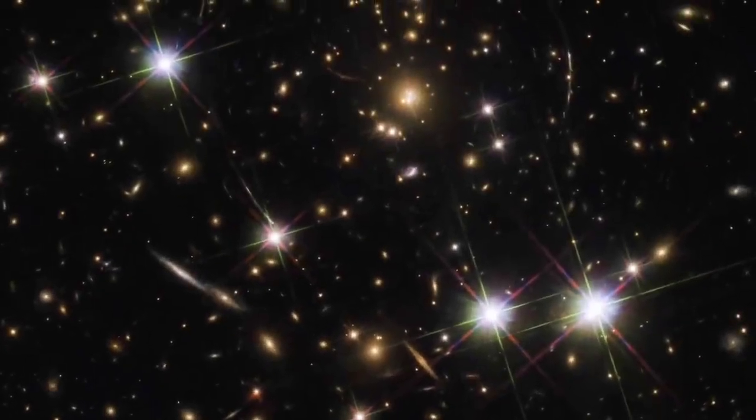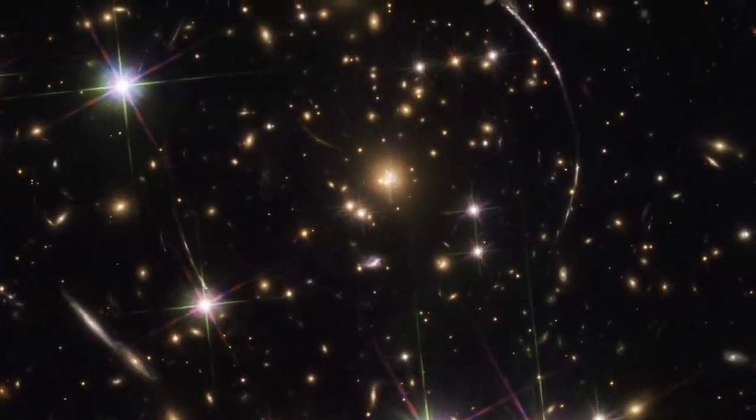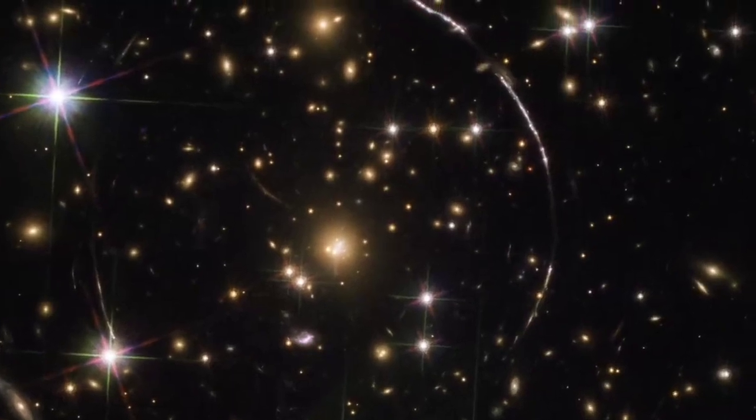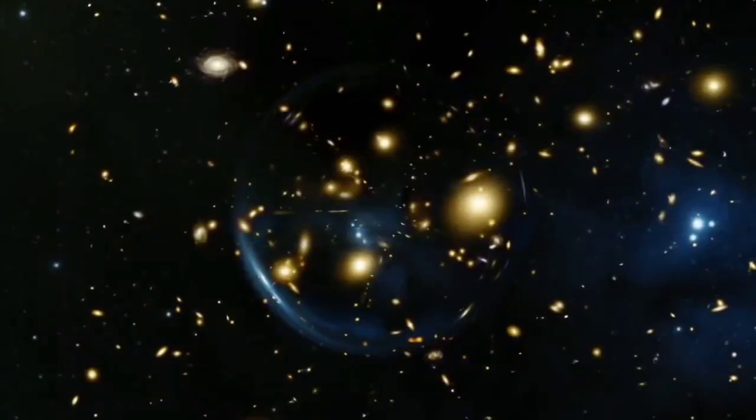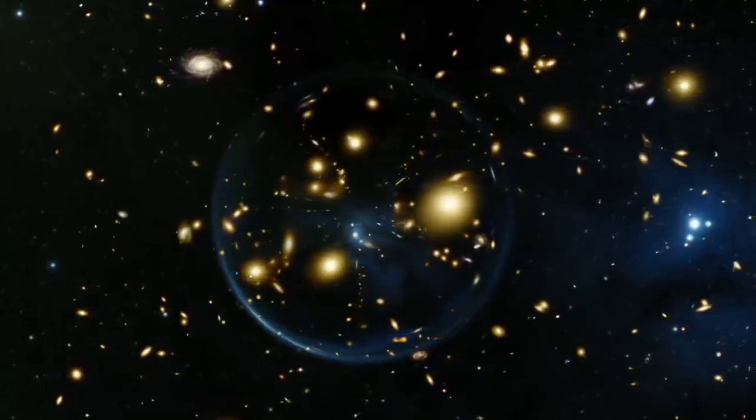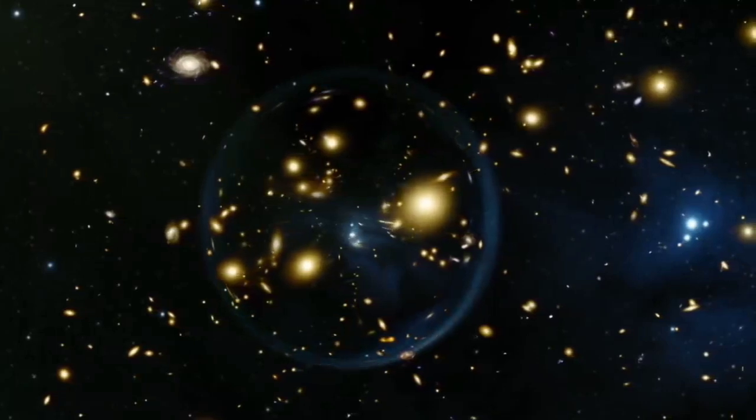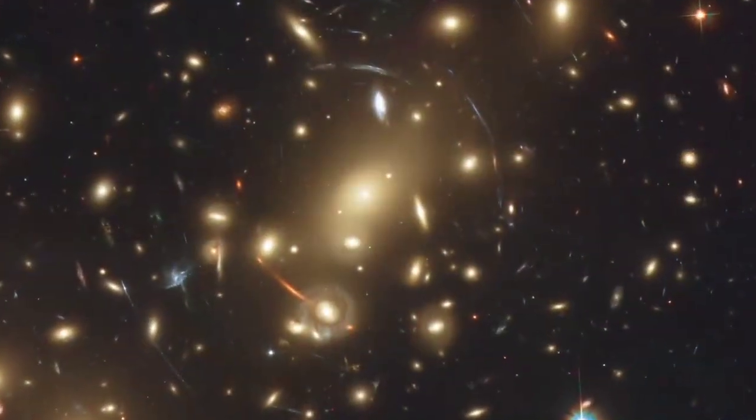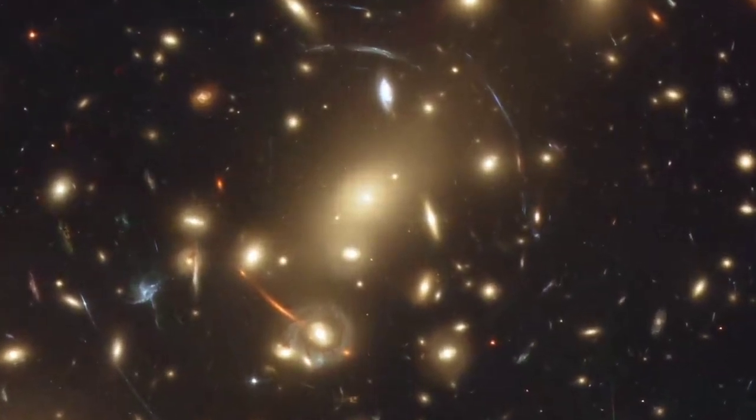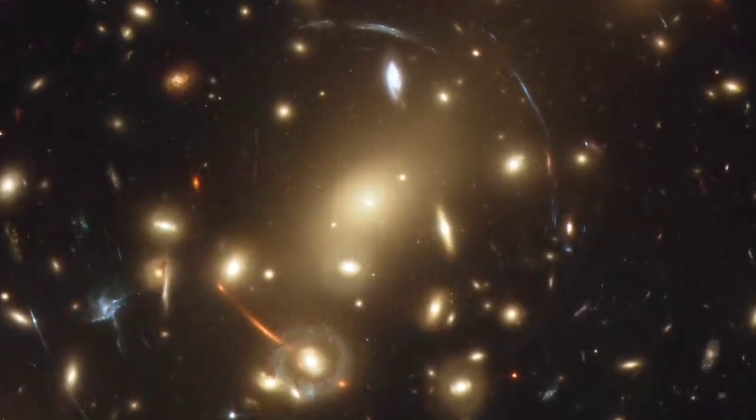Hubble's sensitivity and high resolution allow it to see faint and distant gravitational lenses that are harder to detect with ground-based telescopes. An important consequence of lensing distortion is magnification, which allows us to observe objects that would otherwise be too far away and too faint to be seen. Hubble makes use of this magnification effect to study beyond the sensitivity of its 2.4 meter diameter primary mirror by showing us the most distant galaxies humanity has ever encountered.